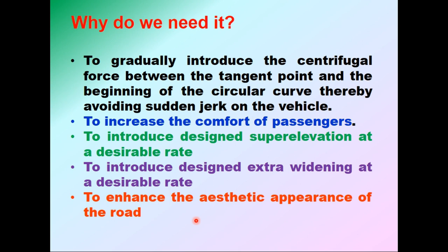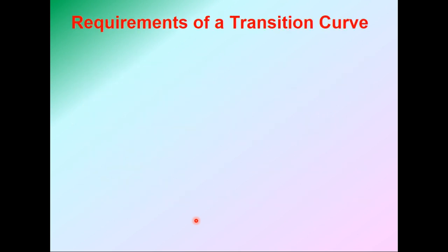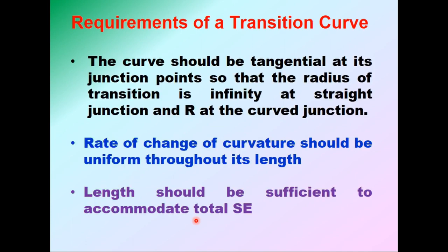The requirements of a transition curve are: first, it should be tangential at its junction points, so the radius is infinity at the straight junction and R at the curved junction. At the beginning of the transition it joins the straight portion, so radius should be infinite, and at the end of the transition length the radius should equal the radius of the circular curve. Second, the rate of change of curvature should be uniform throughout its length. Third, the length should be sufficient to accommodate the total super elevation.